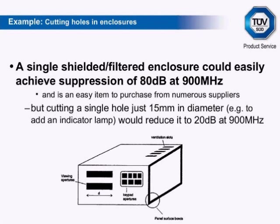A single shielded filtered enclosure could easily achieve suppression of 80 dB at 900 MHz. However, cutting a single hole just 15 mm in diameter — for example to add an indicator lamp — would reduce it to 20 dB at 900 MHz. Shielding is very easily compromised by cutting holes to run cables, pipes, lamps, and other items through the enclosure skin. Further compromise can be caused by incorrect termination of cables, even through an EMC gland if not utilised correctly.